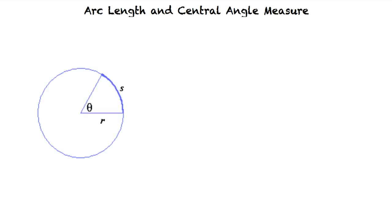If a central angle of theta radians intercepts an arc length S in a circle of radius R, then the length of the arc can be defined as follows: S equals R times theta.